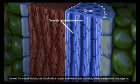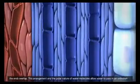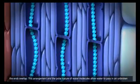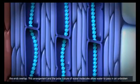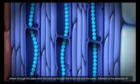cylindrical cells, arranged end to end, and tracheids, which are dead cells that taper as the ends overlap. This arrangement, and the polar nature of water molecules, allow water to pass in an unbroken stream through the xylem, from the roots, up through the shoot, and into the leaves.